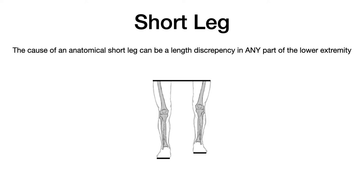Something important to point out is that the cause of an anatomical short leg can be a length discrepancy at any point in the lower extremity. For example, it could be that the femur is longer on one side, the fibula is shorter on one side, or the foot has more bone depth on one side. Any bone or musculoskeletal architecture in the lower extremities can be the reason that you have a short leg.